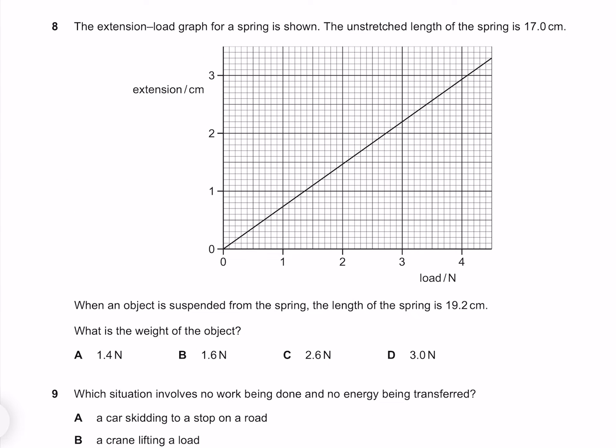The extension-load graph for a spring is shown. The unstretched length of the spring is 17.0 centimeters. When an object is suspended from the spring, the length of the spring is 19.2 centimeters. What is the weight of the object? We have our unstretched spring, and then when we add a mass, we have it stretching by a certain amount. This extension from our unstretched position is what we see graphed here. To find this extension, we need to take this full length here, which is 19.2, and subtract our unstretched length, which is at 17, which gives me 2.2 centimeters. Reading that from our graph at 2.2, we see we have a force of 3 newtons, and so our answer must be D.